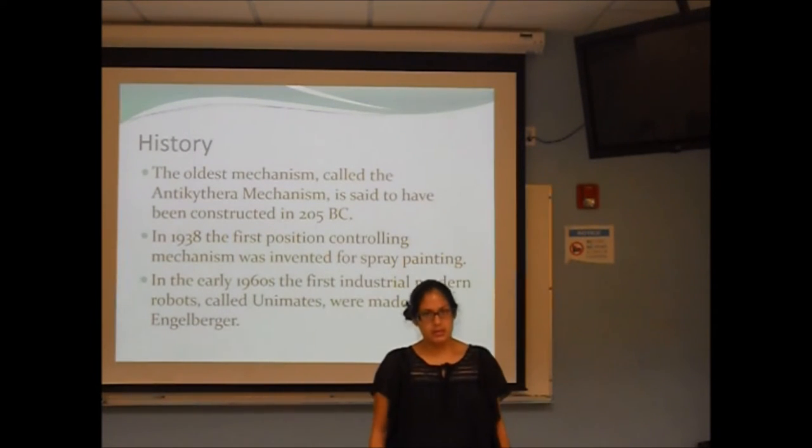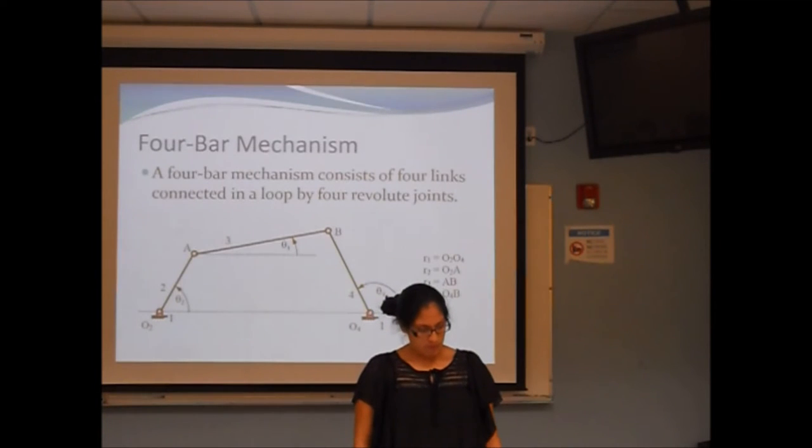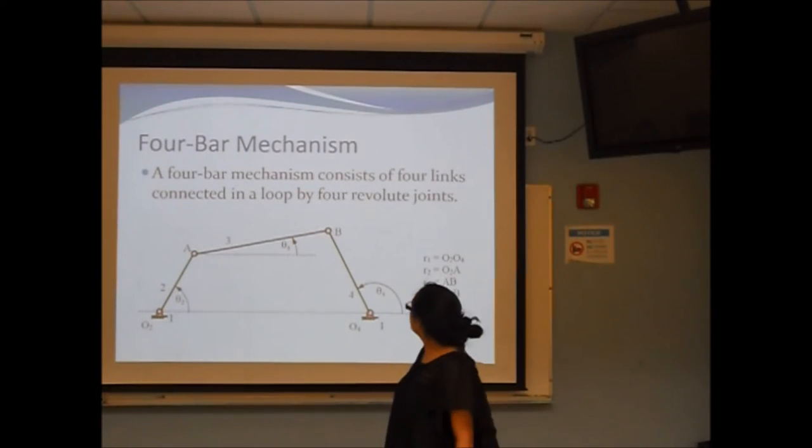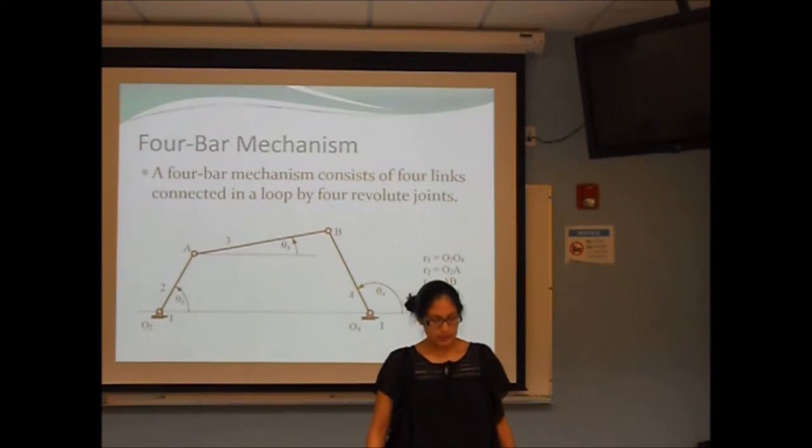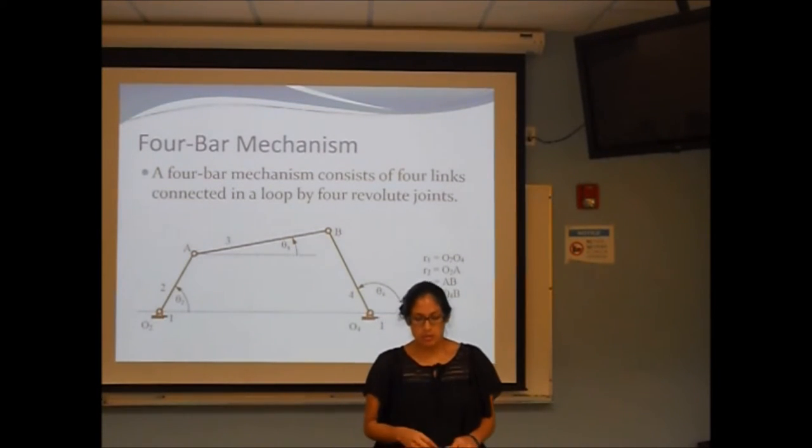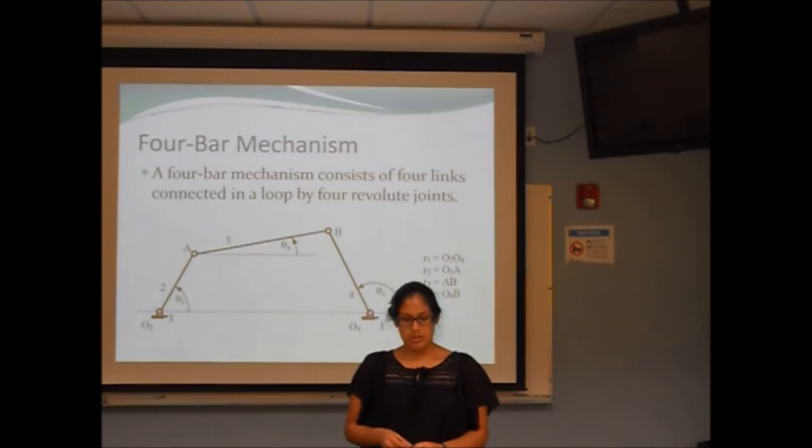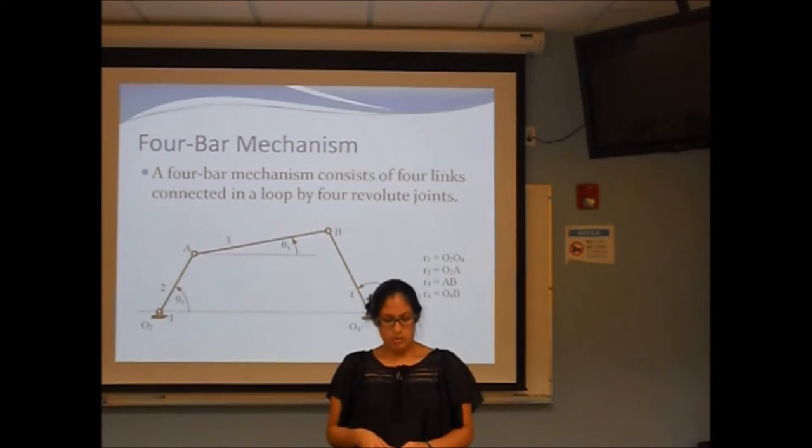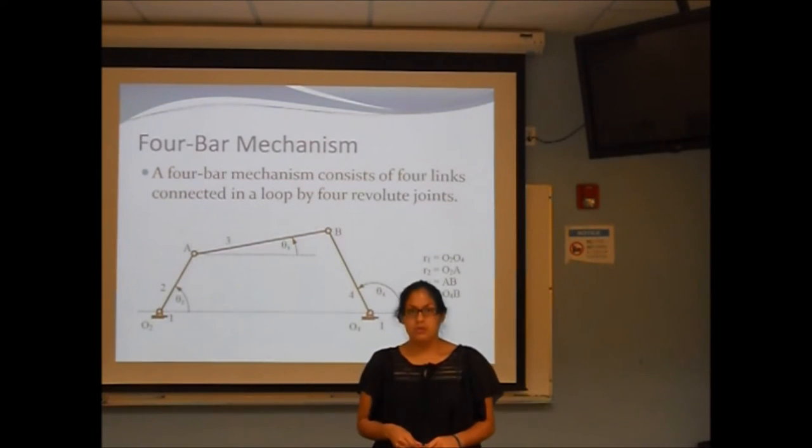In a four-bar mechanism, a member of linkage is connected by the base and a loop of four joints and four links. We know that in our project, we had a Type 1, which is a double crank. A double crank is also known as a drag crank, where the shortest link is at the base, both joints at the base, and is fully rotational.